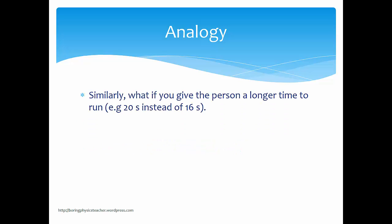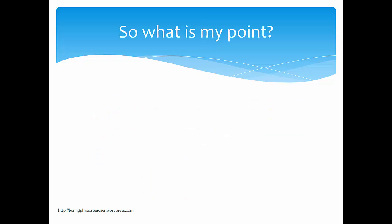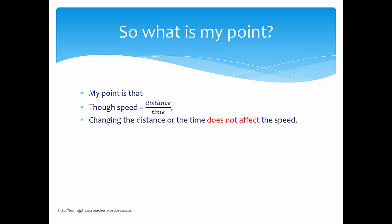Another way to think of it: if you give this person a longer time — say 20 seconds instead of 16 — would he run a longer distance? If he maintains his average speed of 6.25, then distance equals speed times time: 6.25 times 20 equals 125 m. My point is that though you can calculate speed as distance divided by time, changing the distance doesn't actually affect the speed of the person.